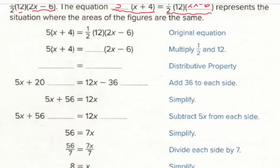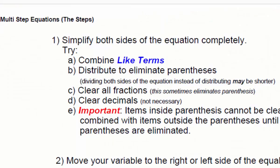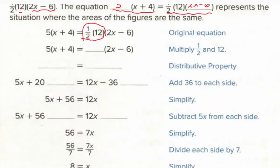All we have to do now is solve this. First, we simplify the multiplication: one-half of 12 gives 6. Following the multi-step approach, step one is to simplify both sides completely first. Then we distribute: distributing on the left gives 5x + 20, and distributing 6(2x − 6) gives 12x − 36.